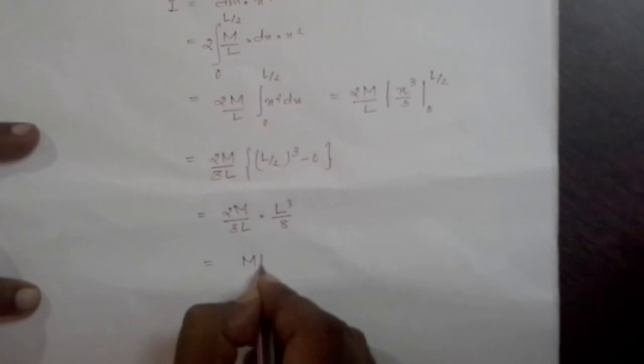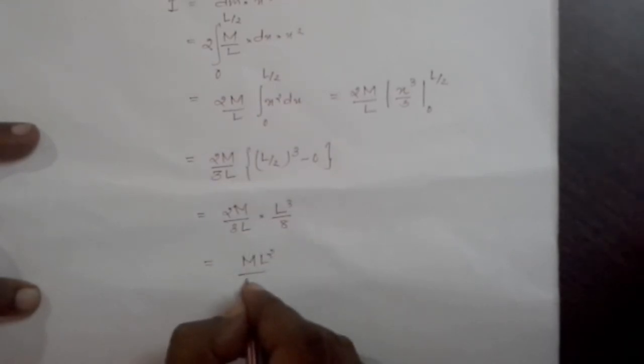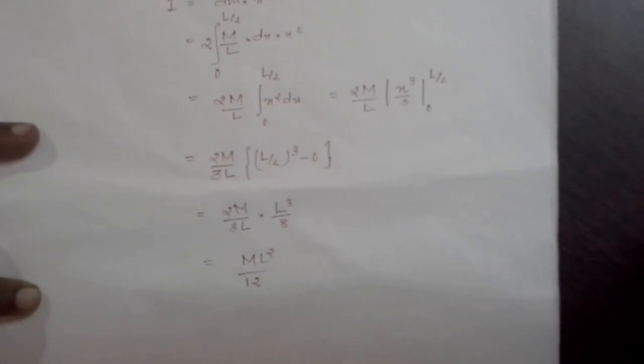Simplifying, we can write it as ML square by 12. This is the required expression for moment of inertia of the rod about an axis passing through its center.